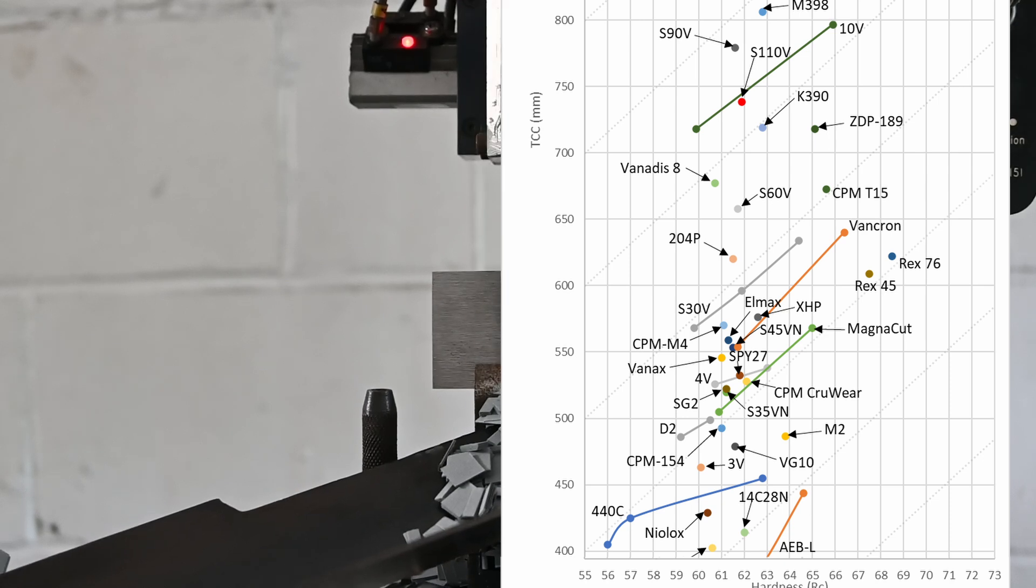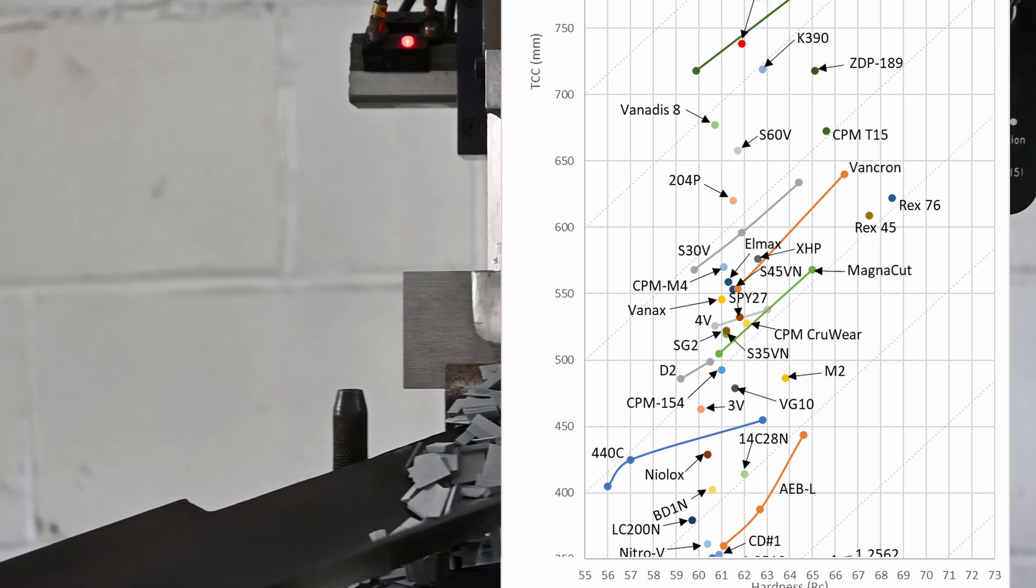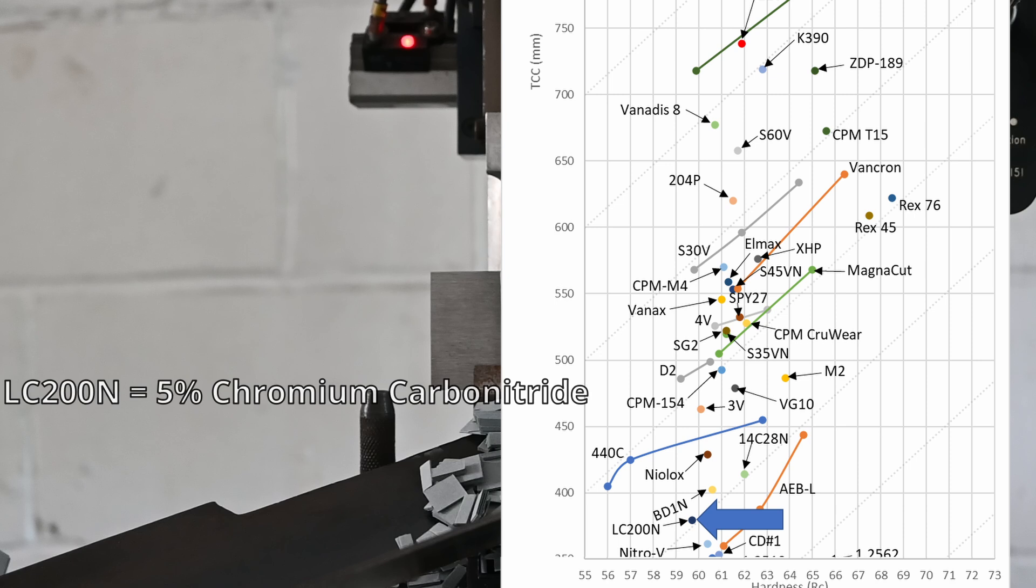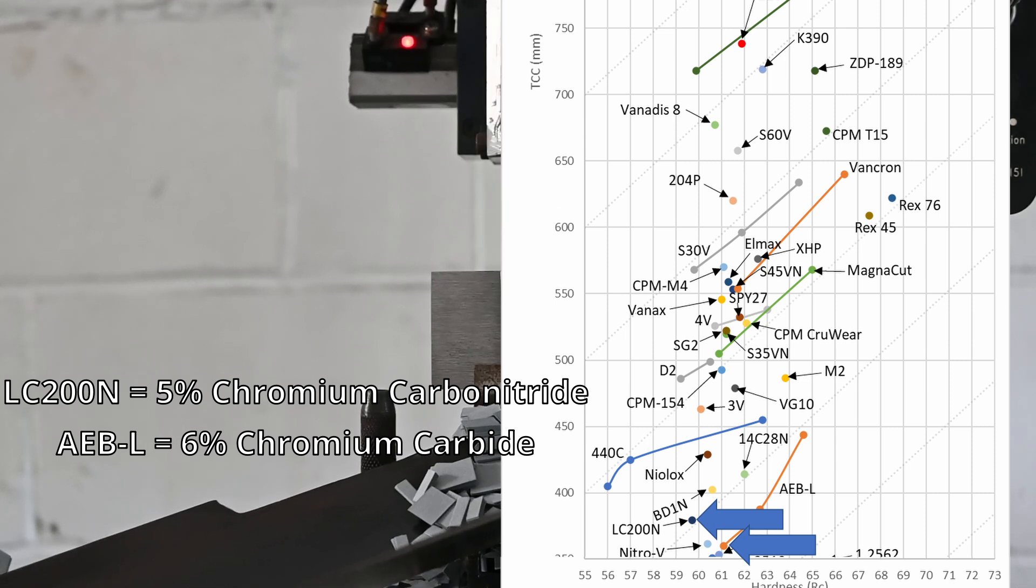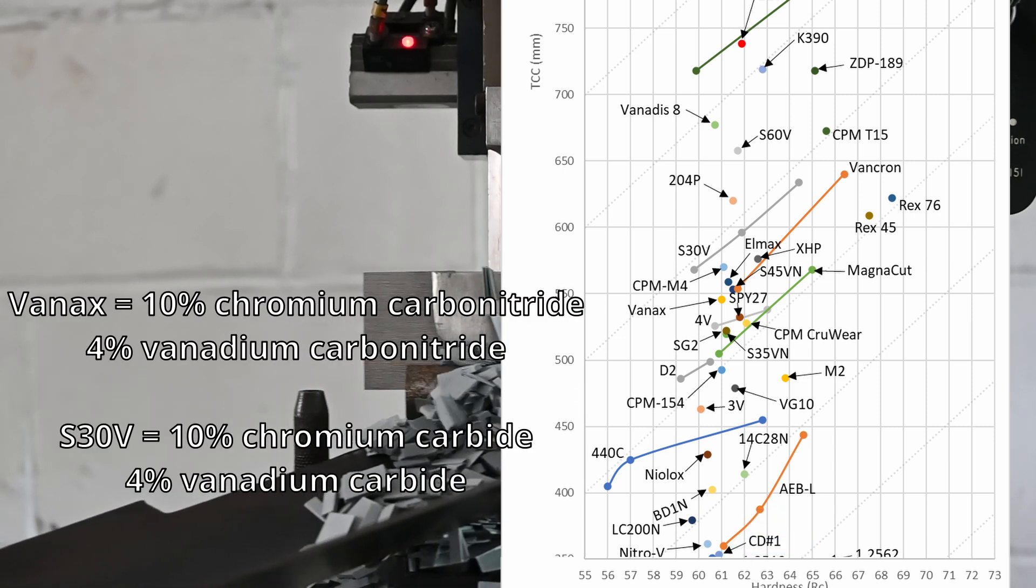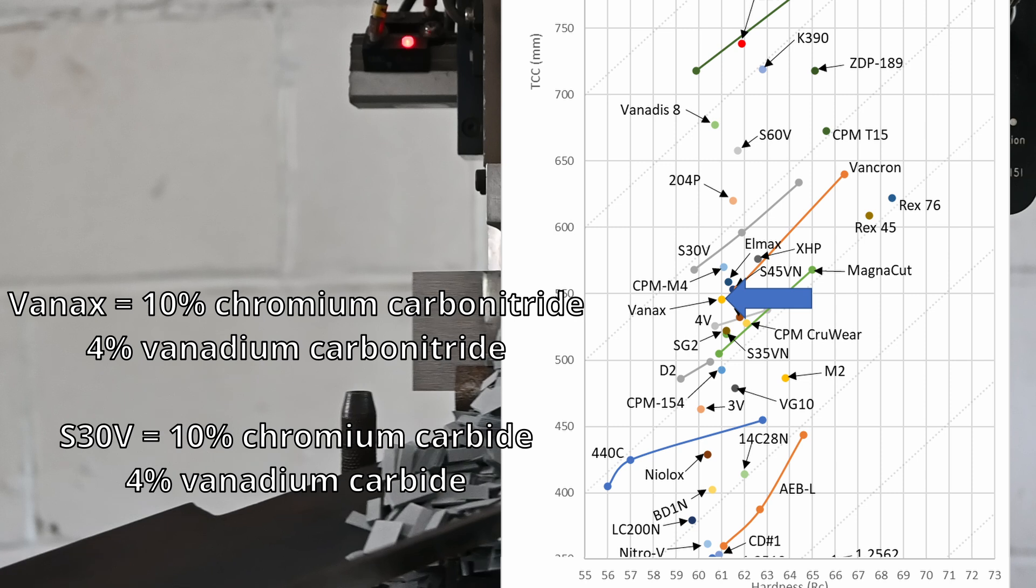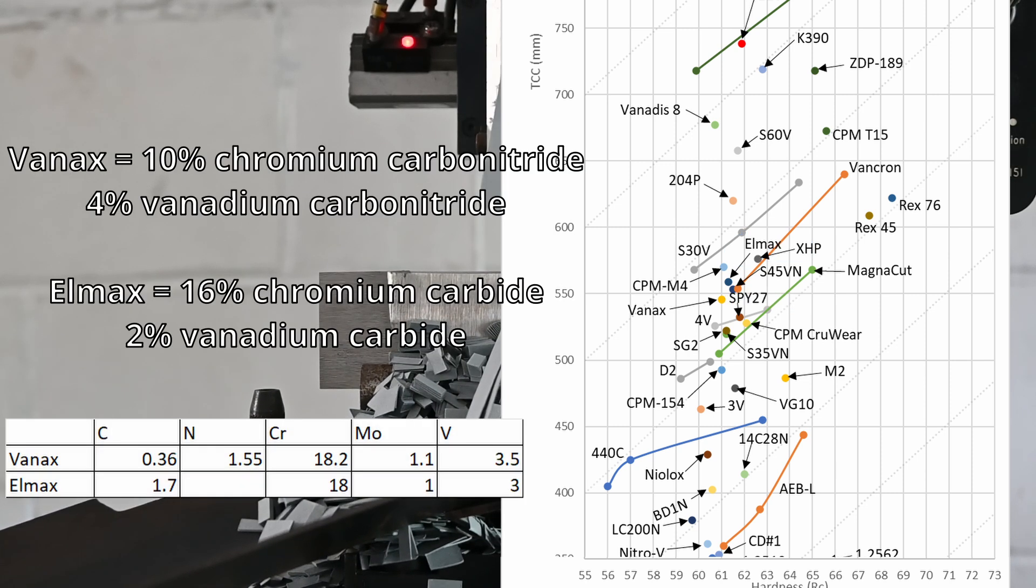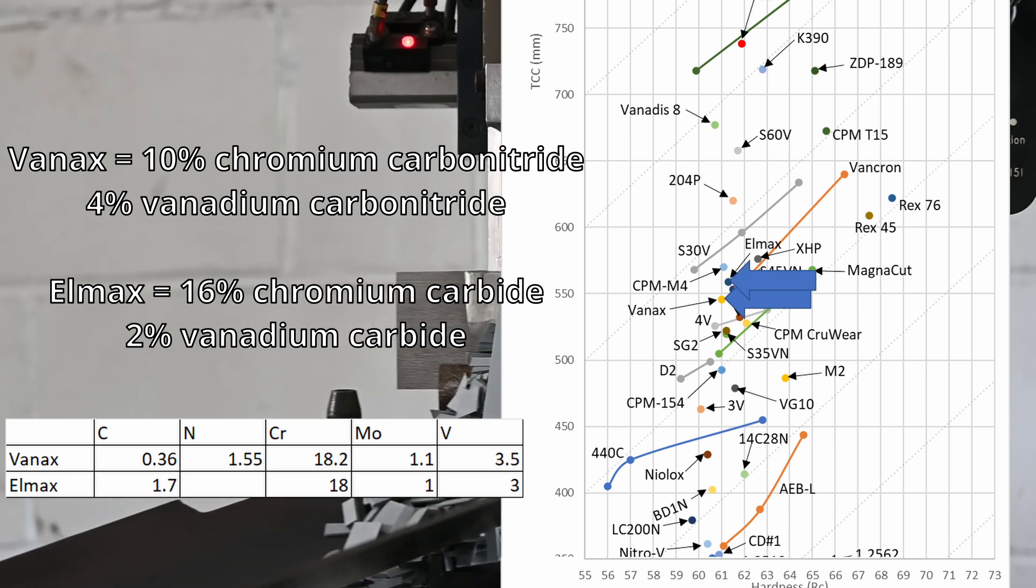Another reason I thought VANCRON would do well is that LC200N and VANAX had done well when compared to their carbon-only counterparts. For example, LC200N has a similar amount of chromium carbonitride as AEB-L does chromium carbide, and LC200N actually did a little bit better than AEB-L, indicating that the chromium carbonitride may be a little harder than chromium carbide. And VANAX has a similar amount of chromium and vanadium carbonitride as S30V does chromium and vanadium carbides, and VANAX only did a little worse than S30V on the CATRA test. The proportions of carbides and carbonitrides are a little different, but Elmax is essentially the same steel as VANAX but with only carbon. And VANAX and Elmax also did very similarly on the CATRA test.